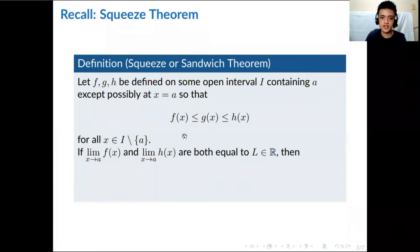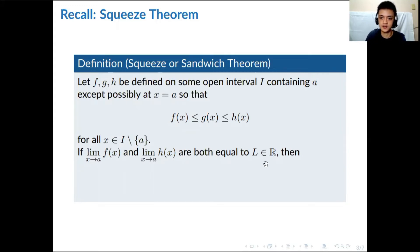When the limit of f(x) equals the limit of h(x) — and these limits must be a real number, meaning they should be convergent — then we are assured that the limit of g(x), the function sandwiched between them, will also be equal to L.